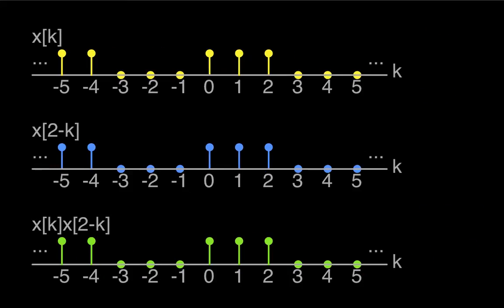So it continues on in this fashion. In the case where N is equal to 2, now I have all three non-zero terms of X lining up with all three non-zero terms of X of 2 minus K. Again, I can sum over any consecutive six samples I want, and I get Y of 2 is equal to 3.